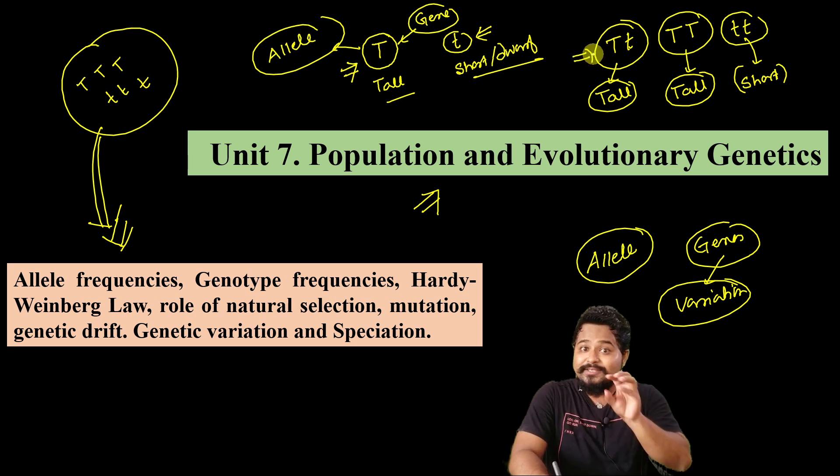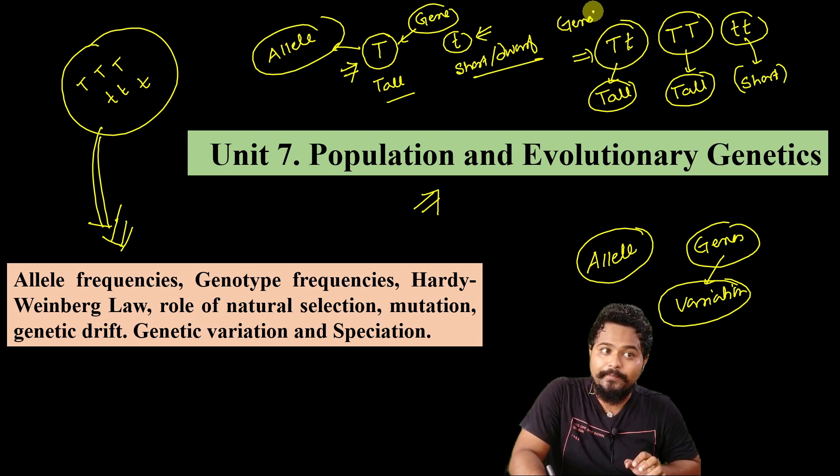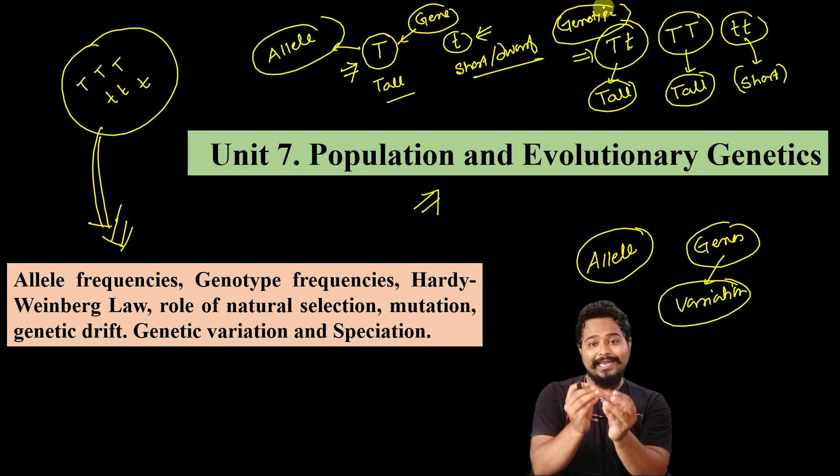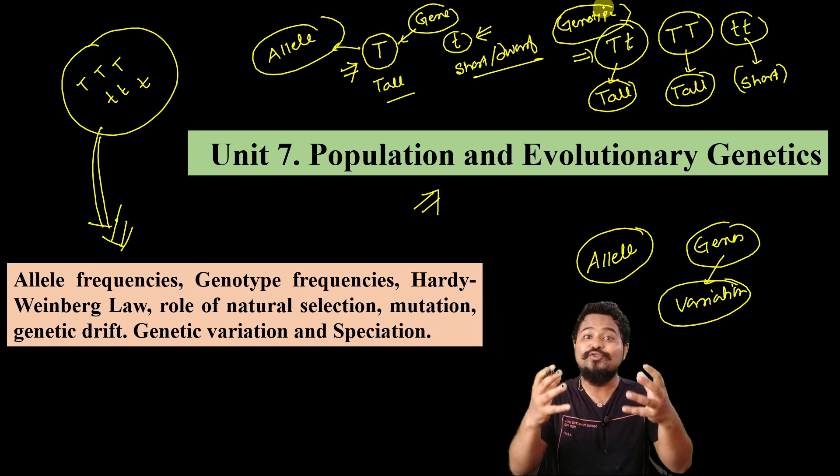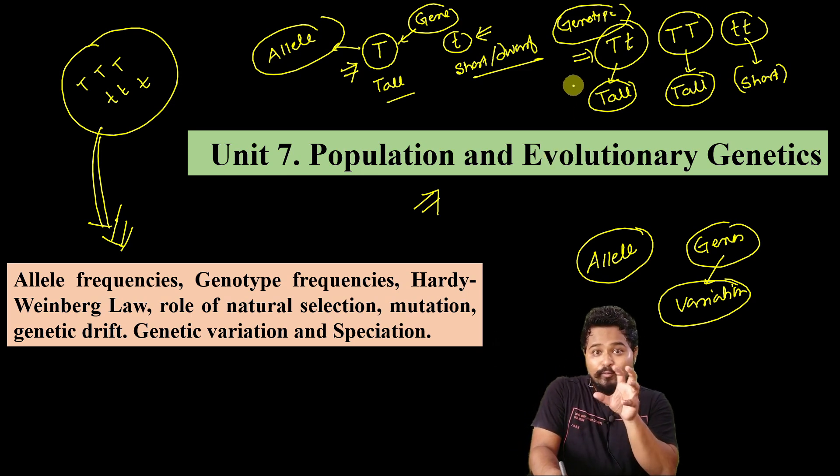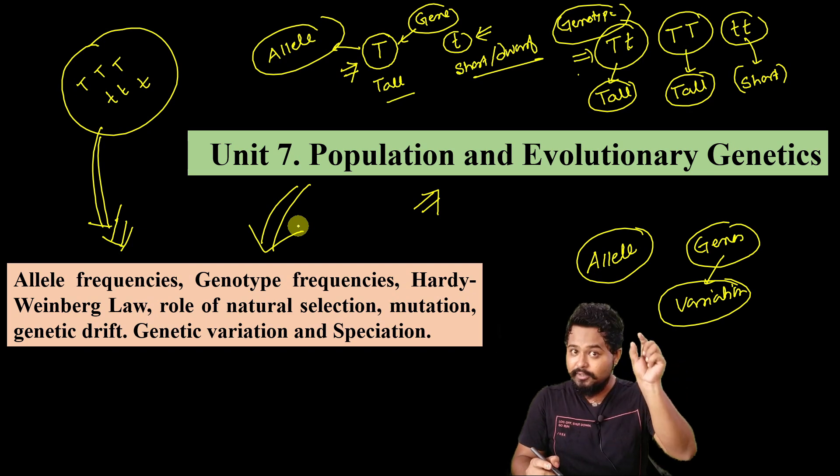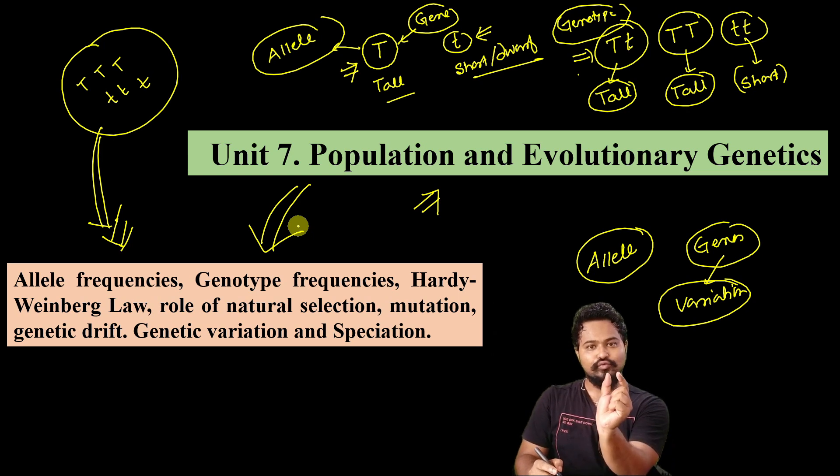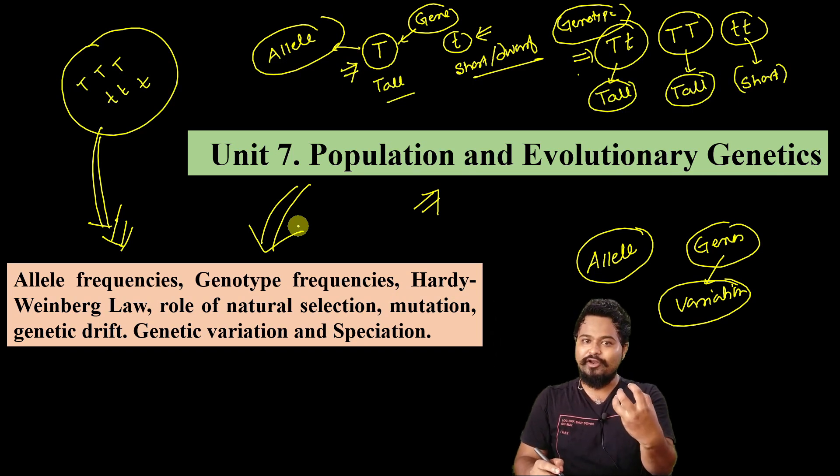An individual or organism with capital T capital T - that is the genotype. The alleles are capital T, capital T, small t, small t. When we count genotypes in a population, that is genotype frequency. Allele is single allele frequency. Genotype frequency is the combination.